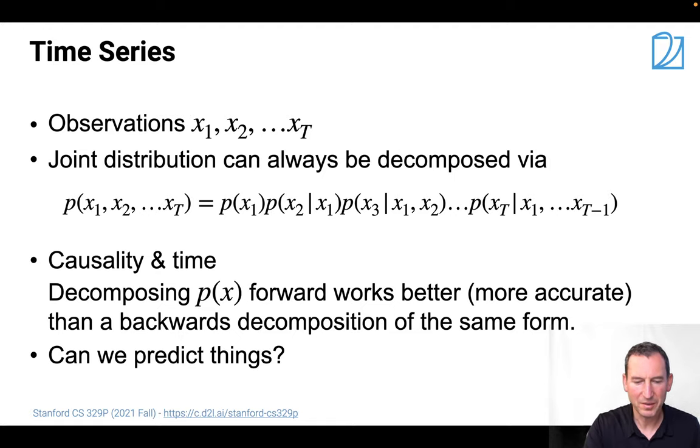So what you can do is you can always decompose the joint distribution into p of x1 times p of x2 given x1 times p of x3 given x1 and x2 up to p of xT given x1 through xT minus 1. That is always the case, regardless of whether I have a time series or not. If I have a bunch of random variables, I can decompose it.